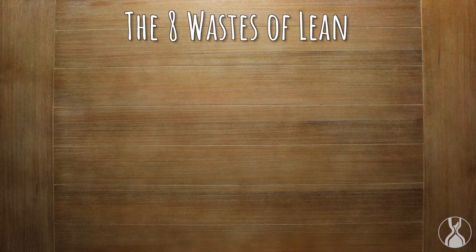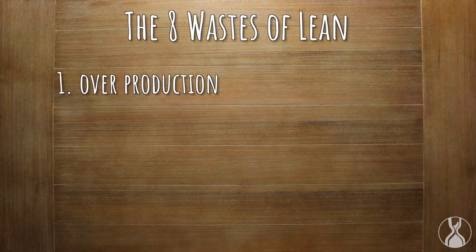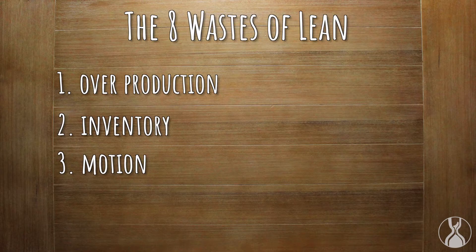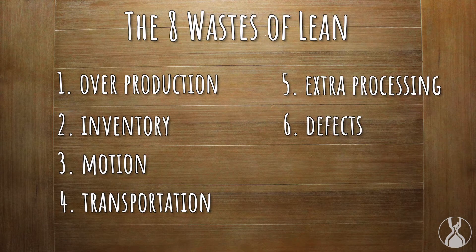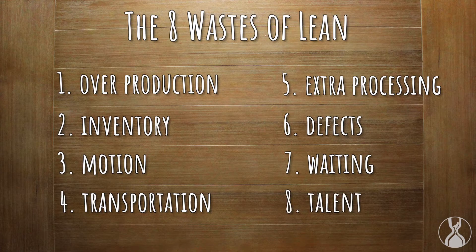So now I've taught you the classic seven wastes of Lean: overproduction, inventory, motion, transportation, extra processing, defects, and waiting. These are the original seven, but someone added an eighth waste for wasting people's brains and creativity. This, in my opinion, is the worst waste of all. If you think about it, the only reason my oil change process wouldn't change and improve over time is if I don't use my brain. If I'm not using my brain on the job or in my life, nothing's going to change — and that's the greatest waste of all.